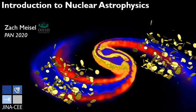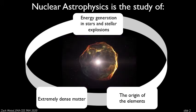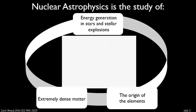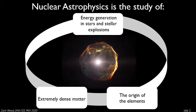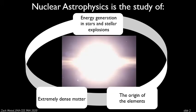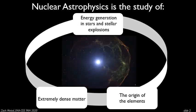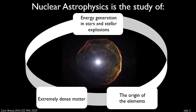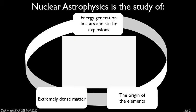This is a brief introduction to nuclear astrophysics recorded for the 2020 Physics of Atomic Nuclei Camp. In a nutshell, it's the study of energy generation in stars and stellar explosions, the study of the origin of the elements — how did all the chemical elements come to be in the abundances that they have in the universe — and also the study of extremely dense matter, because the densest matter in the universe is out in space, and it turns out we need nuclear astrophysics to understand that matter. What I'm going to do is talk about what we do in nuclear astrophysics and the kinds of questions we aim to answer.